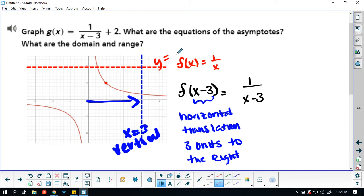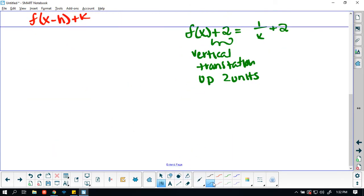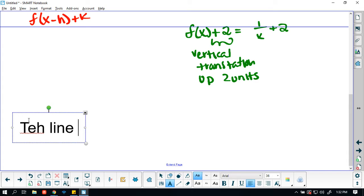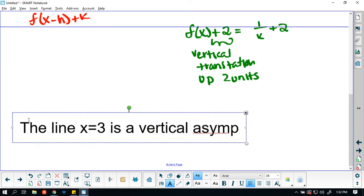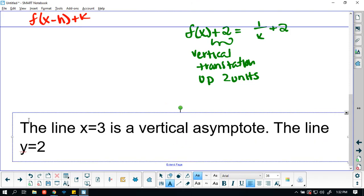And then y equals—vertical's two. Y equals two is my horizontal asymptote. So y equals two is your horizontal asymptote. Let me type this up because that's a little bit better than my chicken scratch. The line x equals three is the vertical asymptote. The line y equals two is the horizontal asymptote.